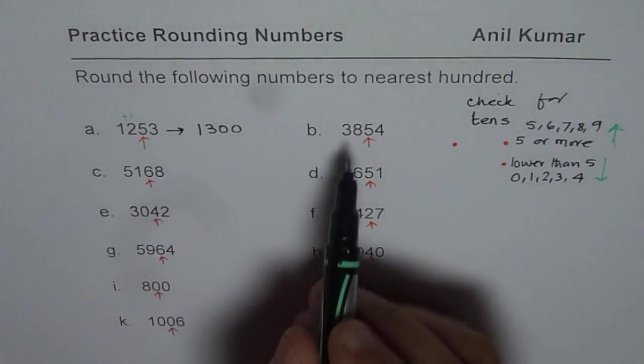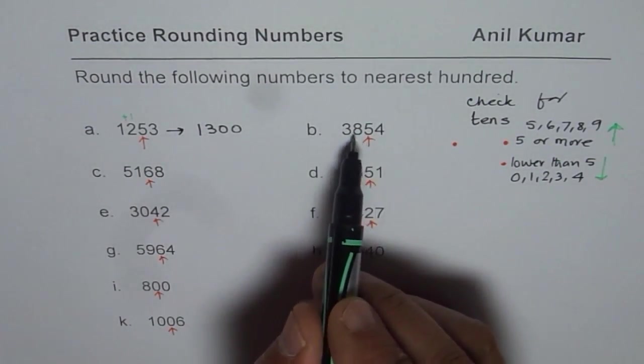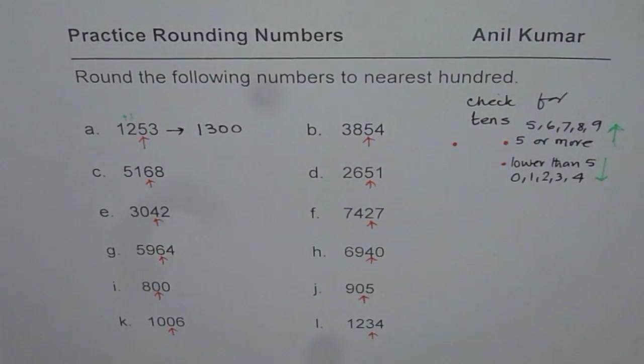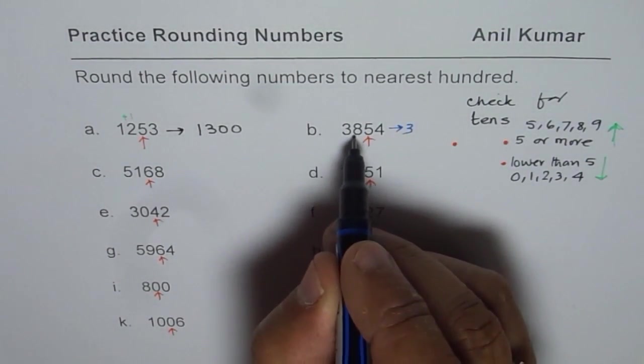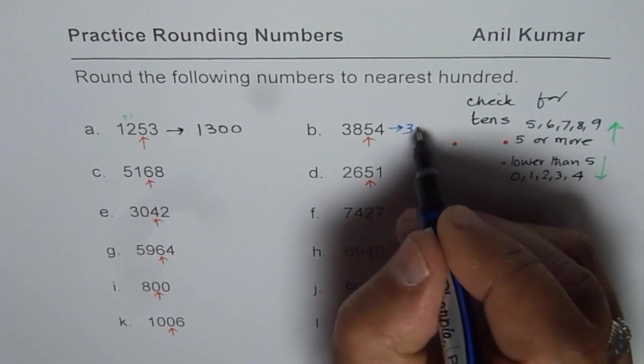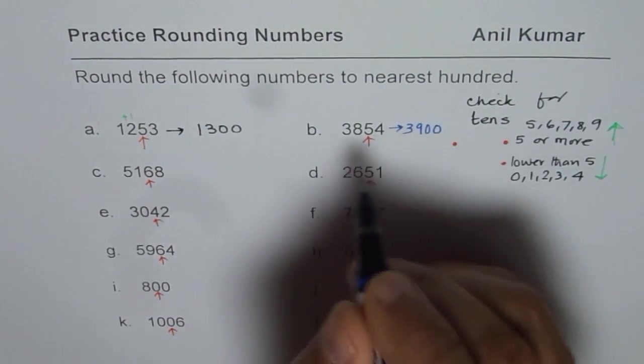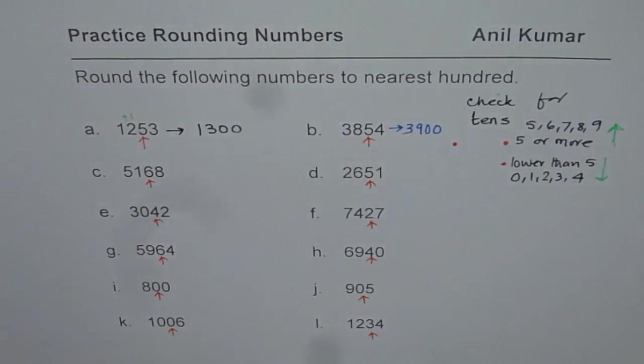Same thing. You can apply it to B. It is 5, 5 or more, round higher. So what do we get? We get this number as, this is 854. It becomes 900. 3900. You get the idea.